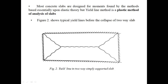In RCC designing, there are certain types of loads. First is service load — the actual working load that comes on the structure. Second is factored load — the service load multiplied by an additional factor of safety. Third is collapse load — the load at which the structure gets failed. At the collapse load, these cracks will be developed in the slab.